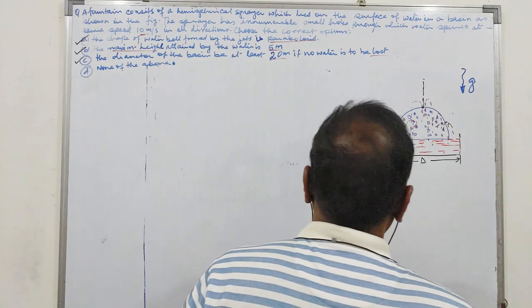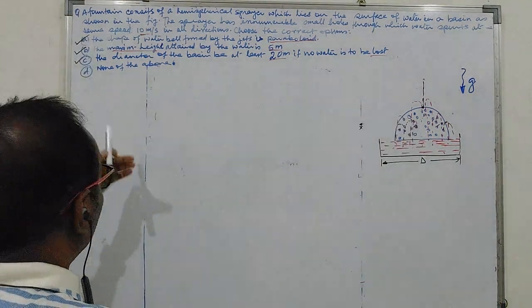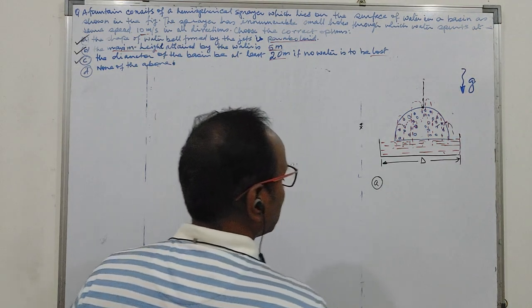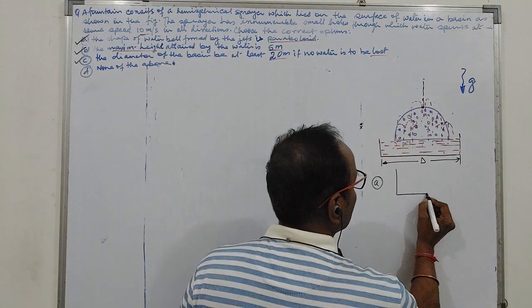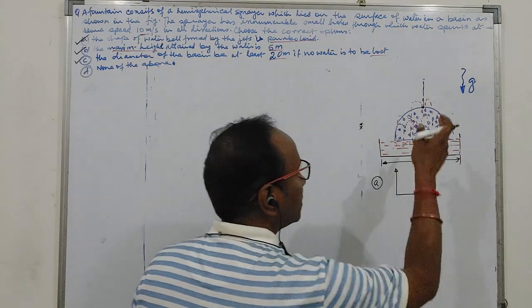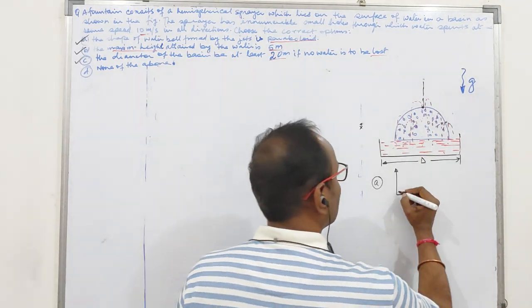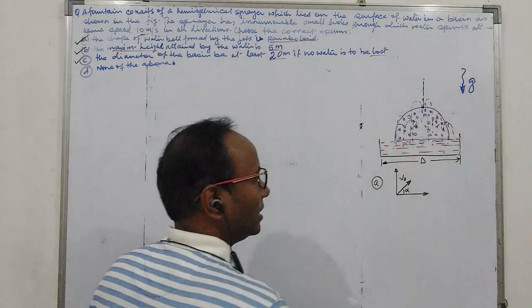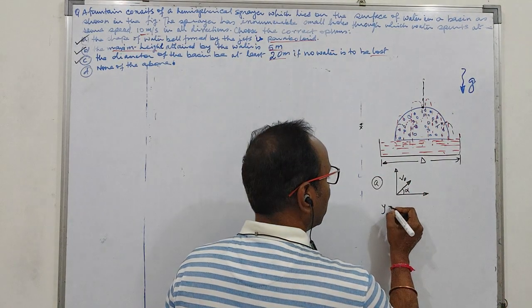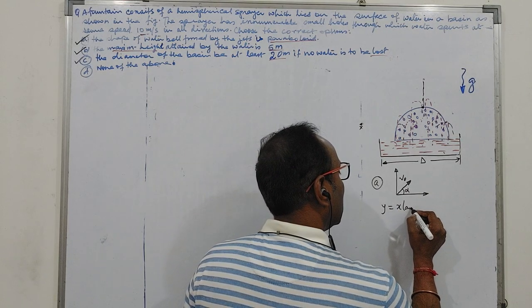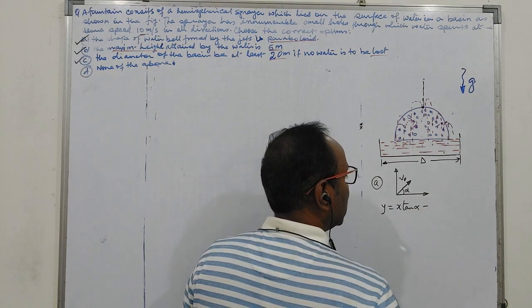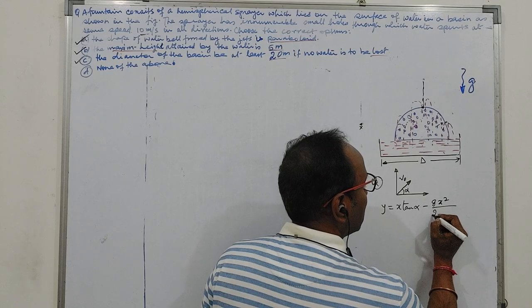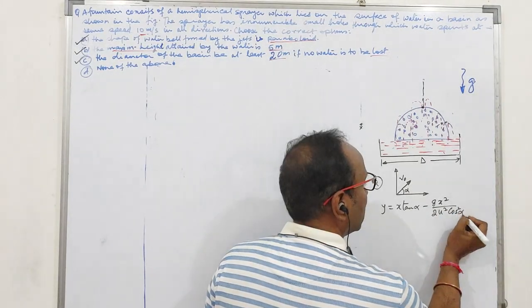It is asking, so let us start with first A part and then we will come down further. Water coming out is exposed to the Earth's gravitational field. Speed is V0. We are writing equation for that. So we know that it will follow a trajectory of x tan alpha minus gx square over 2u square cos square alpha.